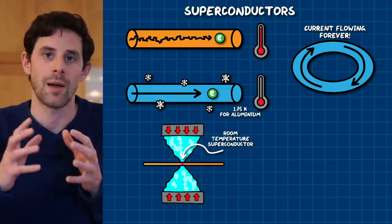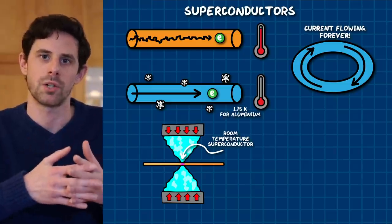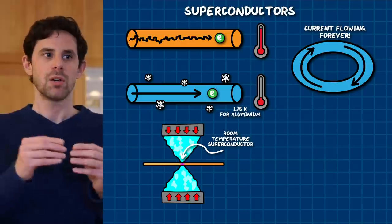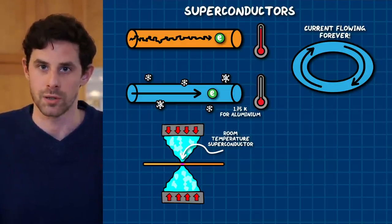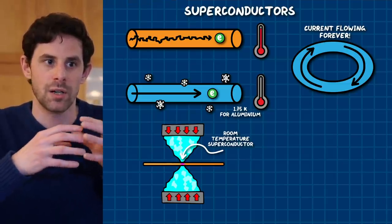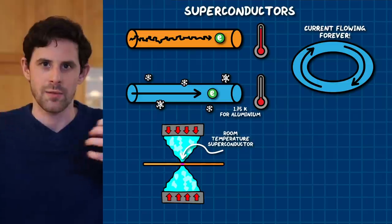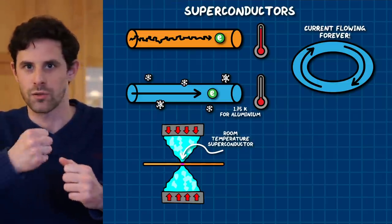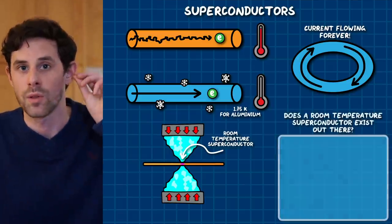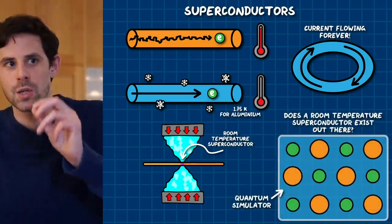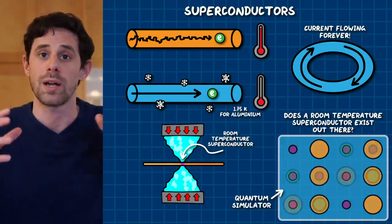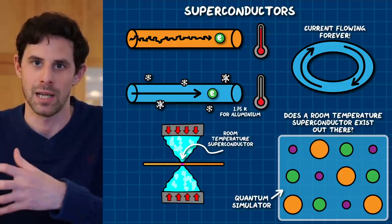The point is there could be a material out there that superconducts at room temperature and room pressure — we just haven't discovered it yet. Because we don't have a theory of high temperature superconductivity, searching for that material is currently a bit like alchemy: you just try different combinations of materials, grind them up, squeeze them together, and see what their properties are. But with a quantum simulator you could potentially search through all those different combinations a lot quicker and measure their physical properties in the simulator.